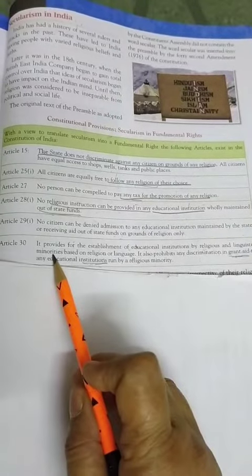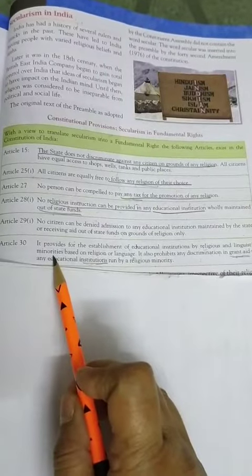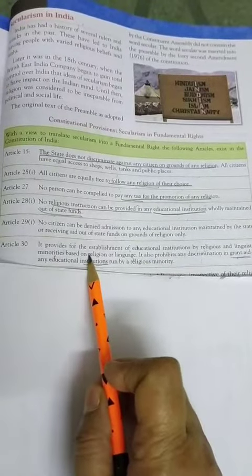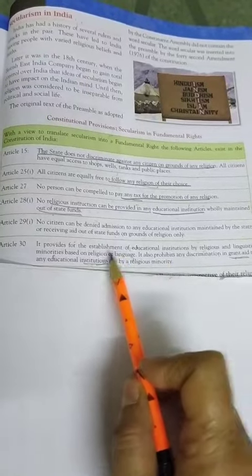कि जो लोग religious या linguistic, यानि कि language में minority है, India में धर्म और language को लेके, जो गिनती में कम है, उनको ये right है, कि वो अपना education institution, कोई भी school या college, वो establish कर सकते हैं.